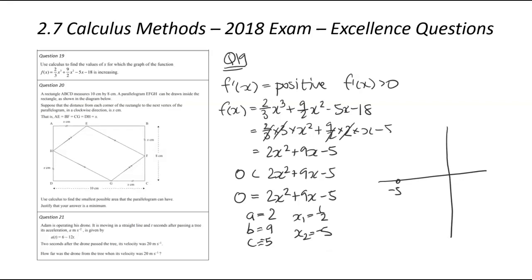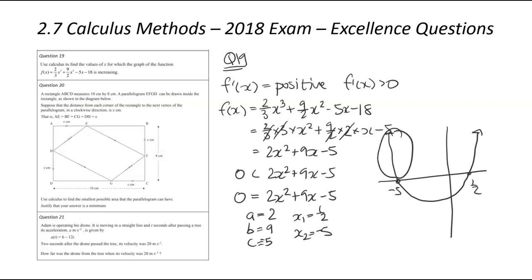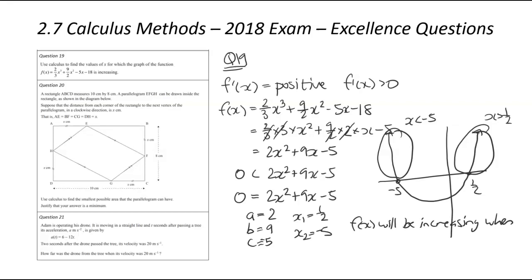We know it's a positive parabola because of the positive two x squared, and we know the two x-intercepts. So negative five is over here and positive one half is over here — there's our positive parabola. We're wanting to know when it is above zero. It'll be above zero in two areas: when x is less than negative five, and when x is greater than positive one half. So the function will be increasing when x is less than negative five or when x is greater than positive one half. Pretty easy excellence question if you understand the quadratics part of it.